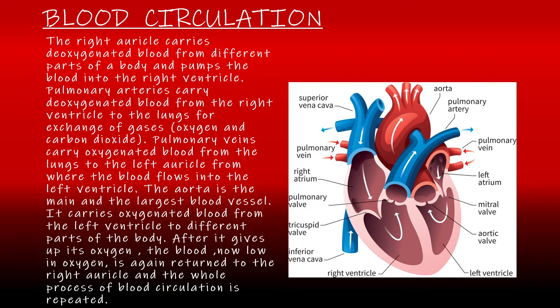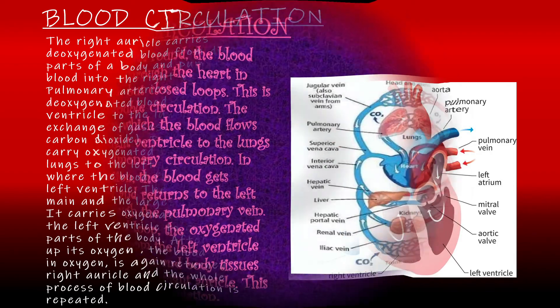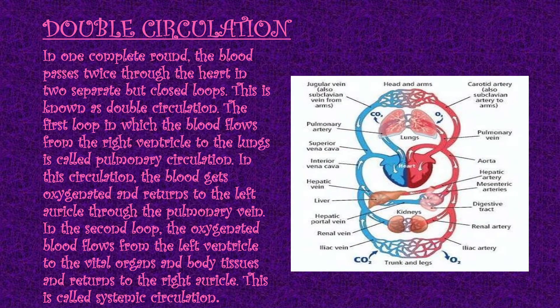After giving up its oxygen, the blood — now low in oxygen — is again returned to the right auricle and the whole process is repeated. In one complete round, the blood passes twice through the heart in two separate but closed loops; this is known as double circulation. The first loop, where blood flows from the right ventricle to the lungs, is called pulmonary circulation. The second loop, where oxygenated blood flows from the left ventricle to the vital organs and body tissues and returns to the right auricle, is called systemic circulation.